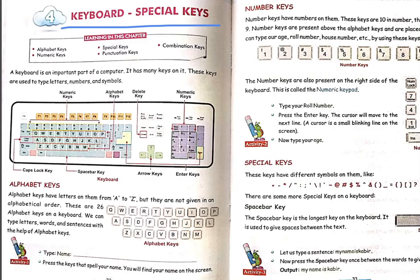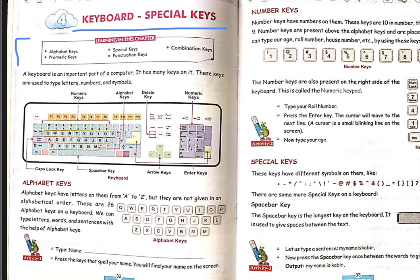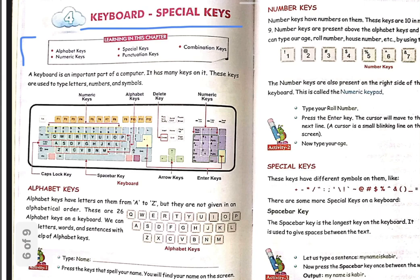The keyboard is an input device that the computer has. In this chapter, we will learn about the special keys available in input devices. There are five points to cover: alphabet keys, numeric keys, special keys, punctuation keys, and combination keys.